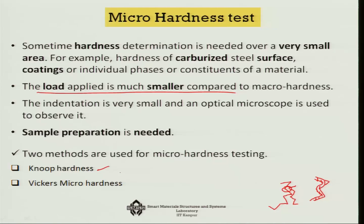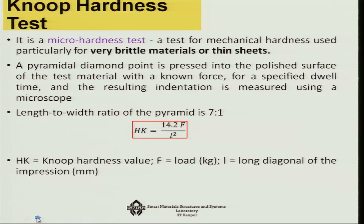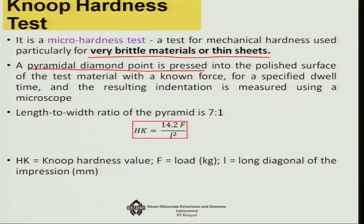There are two methods used: Knoop hardness and Vickers micro hardness. The Knoop hardness test is mostly used for very brittle materials or thin sheets. A pyramidal diamond point is pressed into the polished surface of the test material for a specified time, and the resulting indentation is measured using a microscope.